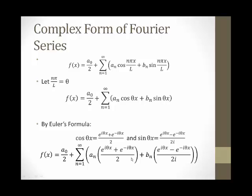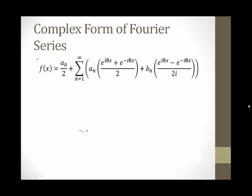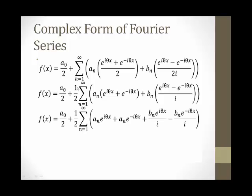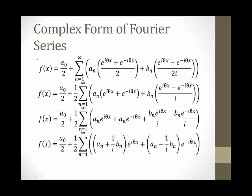Now we have the Fourier series in complex form, but the next step will be simplifying this to make it easier to work with. In order to simplify, the first step we will do is factor out a one-half, which comes out to the front in our second equation. Next, we will multiply our coefficients a_n and b_n through to our exponential terms, as you can see they are expanded out. We can then factor out e to the i theta x and e to the negative i theta x to result in our equation at the bottom.